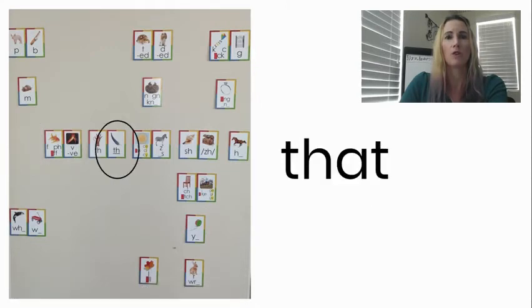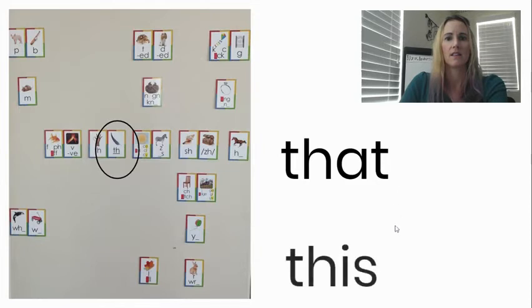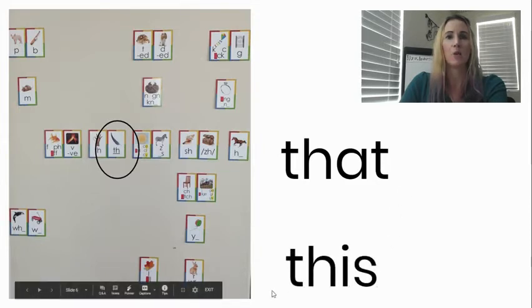Now we're going to move over to our T-H digraph that is voiced. So when it's voiced it means we're saying th. Your tongue goes under your teeth and you're pushing the air out to say th. Th-A-T. Say the word that. Now th-I-S. Say the word this.